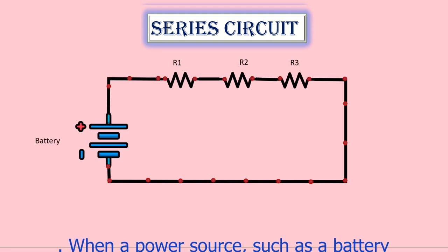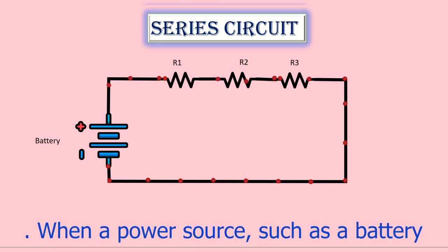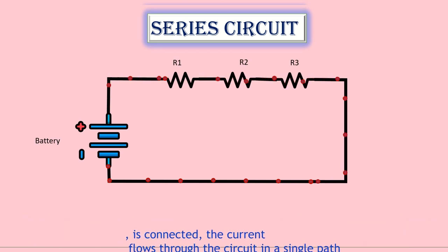When a power source, such as a battery, is connected, the current flows through the circuit in a single path.